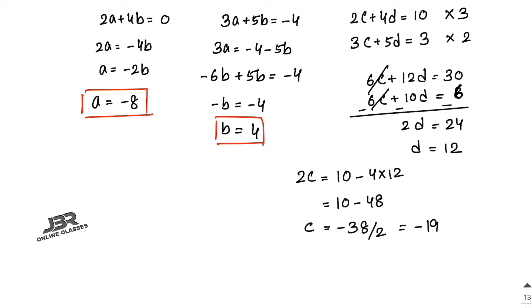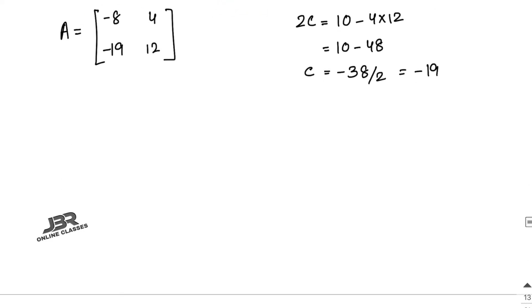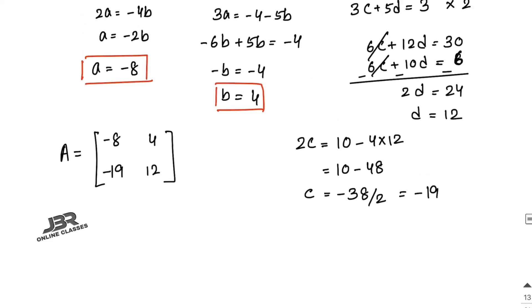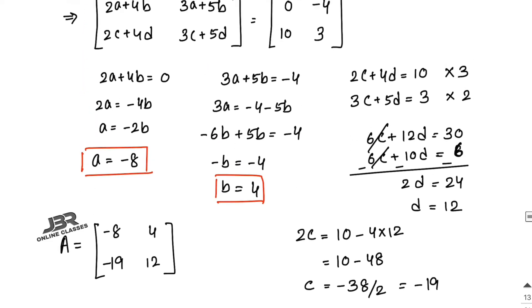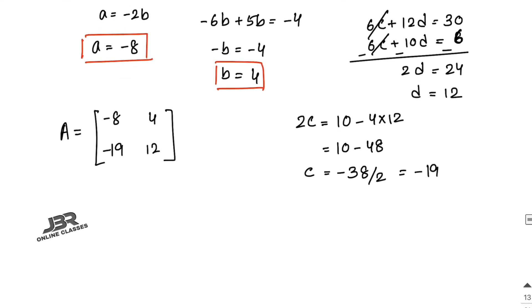So matrix A equals [-8, 4; -19, 12] — that is the final answer for sum 23. Sum number 24 is the same as sum number 23, so I hope you can solve it.